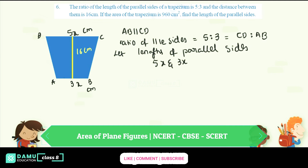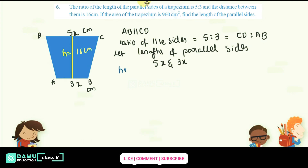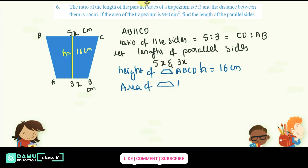The height of trapezium ABCDE, small h, will be equal to 16 centimeters. They are also given that the area of trapezium ABCDE, capital A, will be equal to 960 square centimeters.